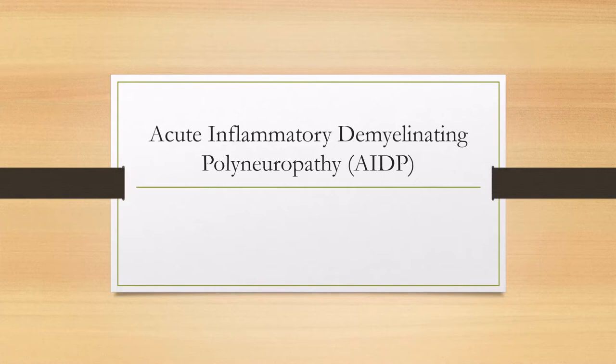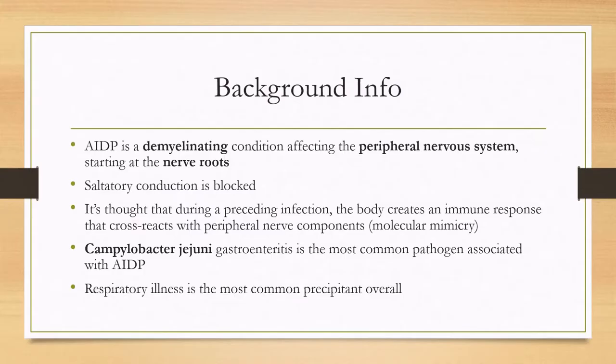Let's talk about Acute Inflammatory Demyelinating Polyneuropathy, or AIDP. AIDP is a demyelinating condition affecting the peripheral nervous system, and it's thought to start at the nerve roots. Because it's demyelinating and myelin helps saltatory conduction, demyelination will stop the saltatory conduction. The pathogenesis is that during a preceding infection, the body creates an immune response against both the antigen and something that cross-reacts with peripheral nerve components — this is called molecular mimicry.